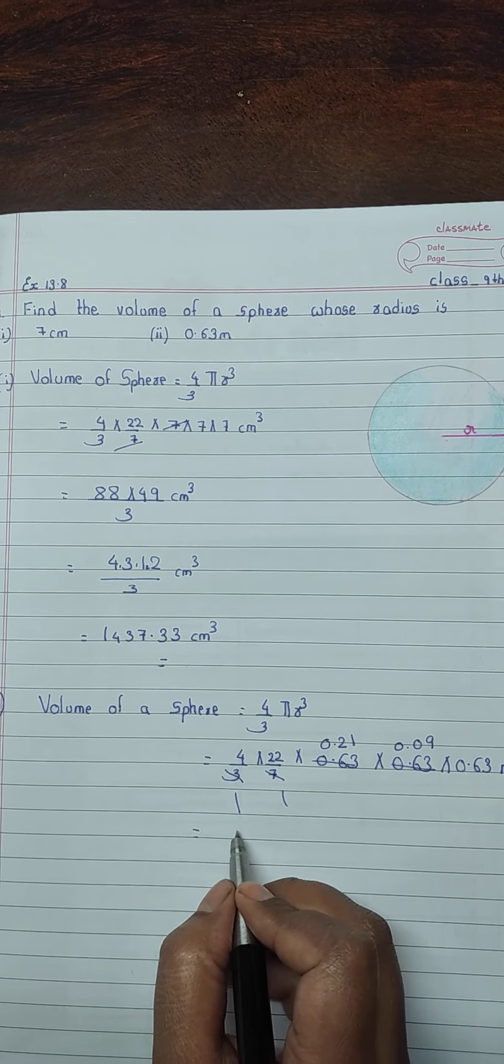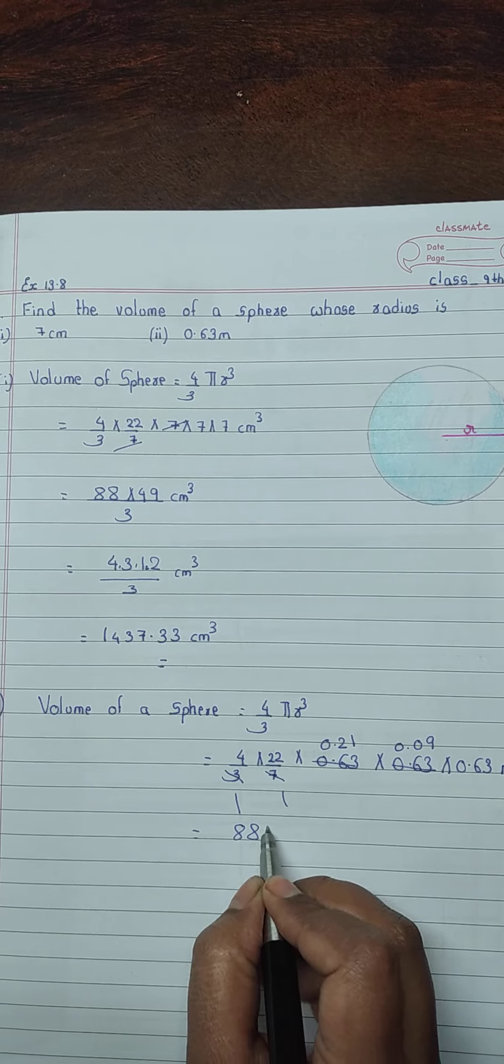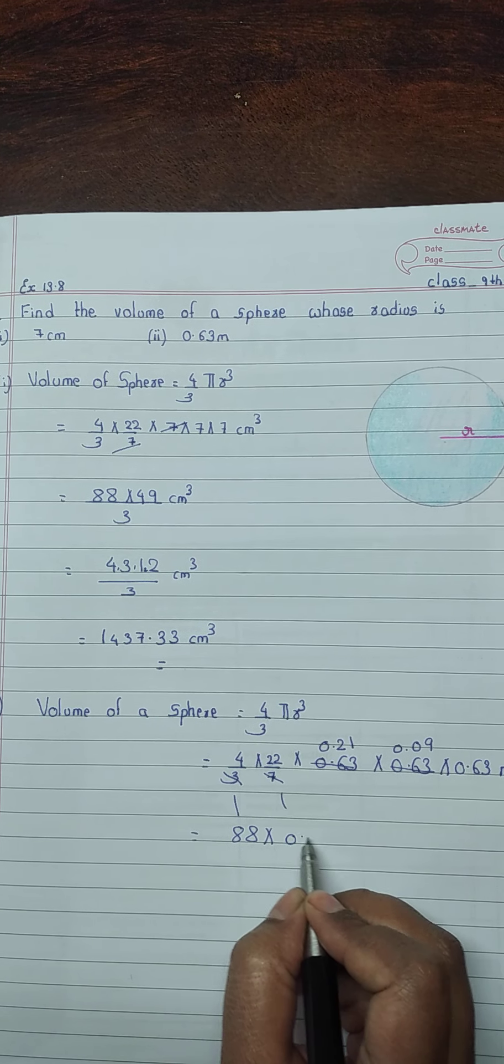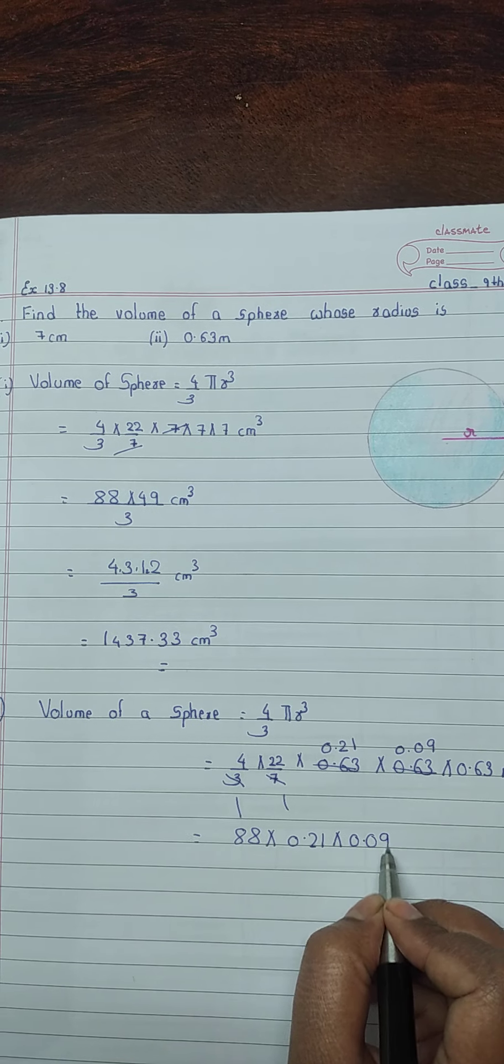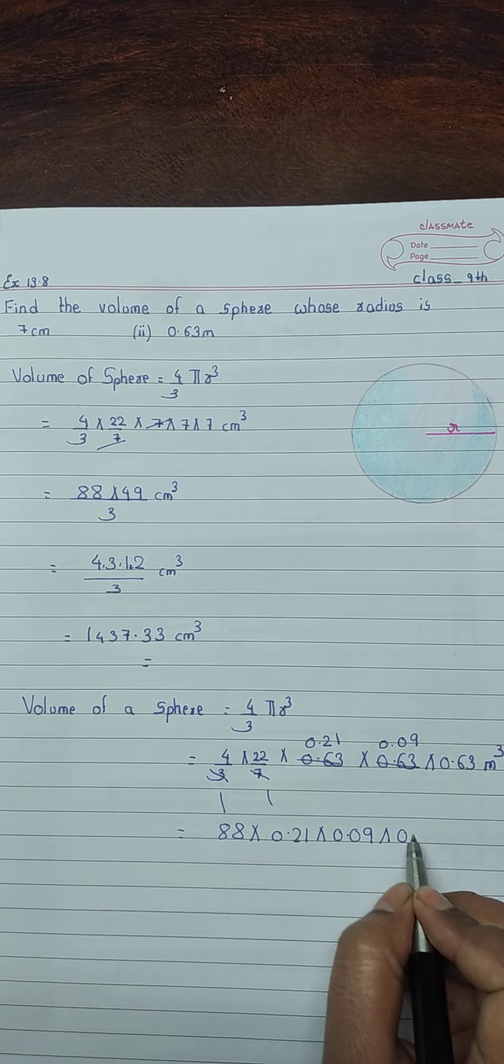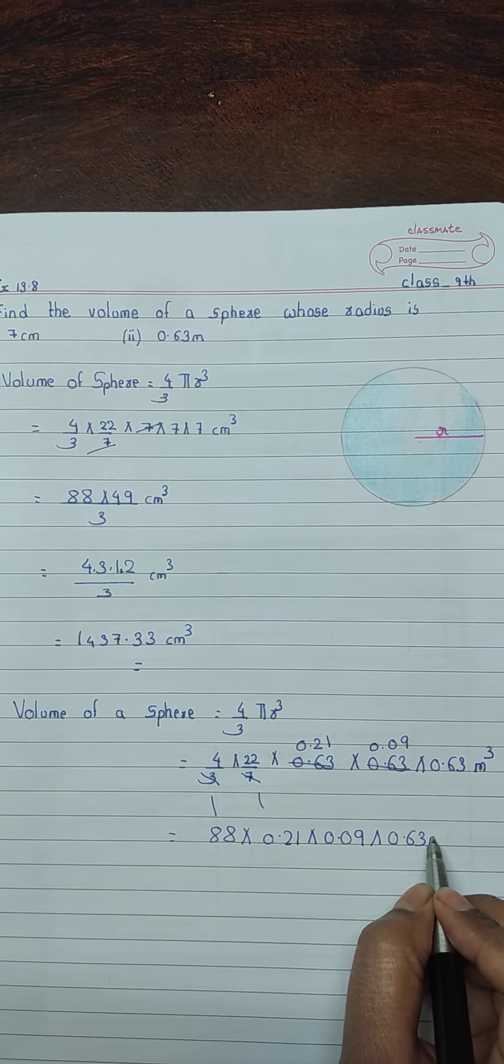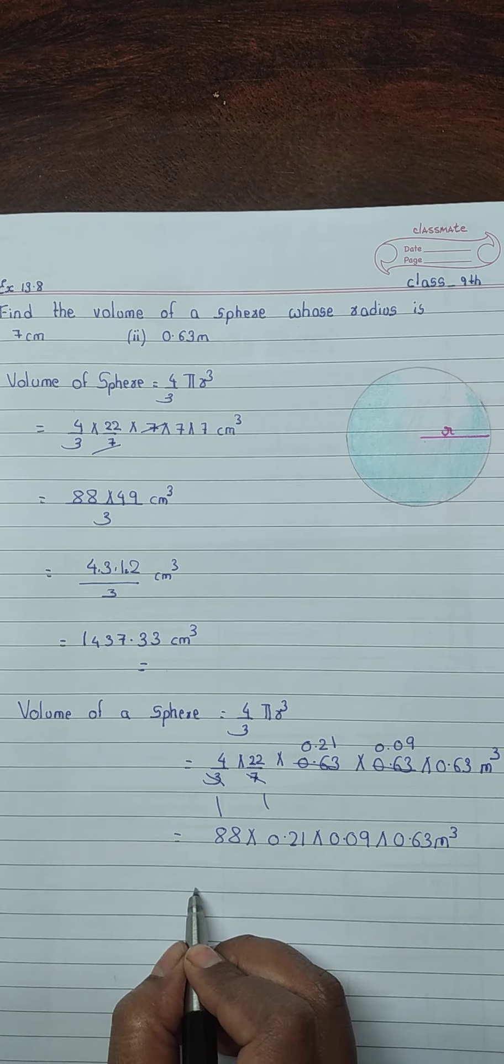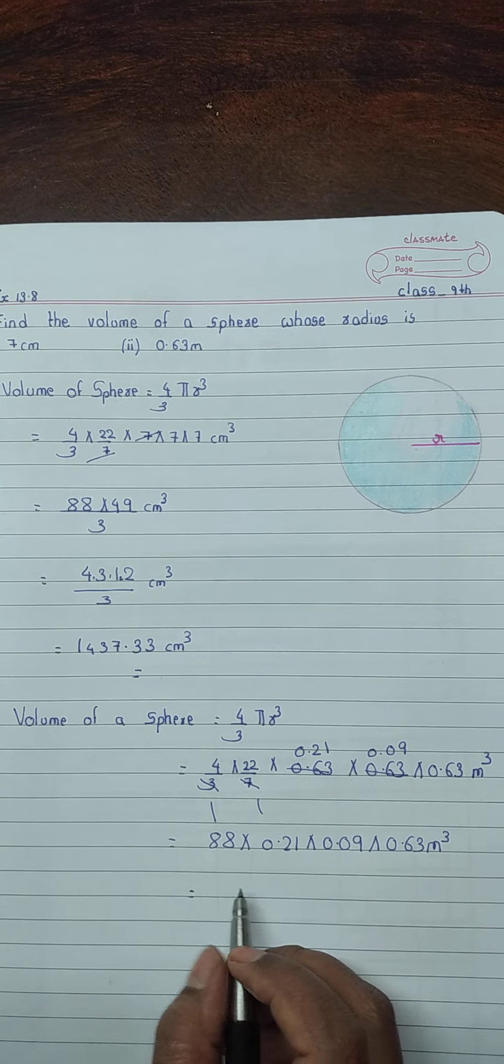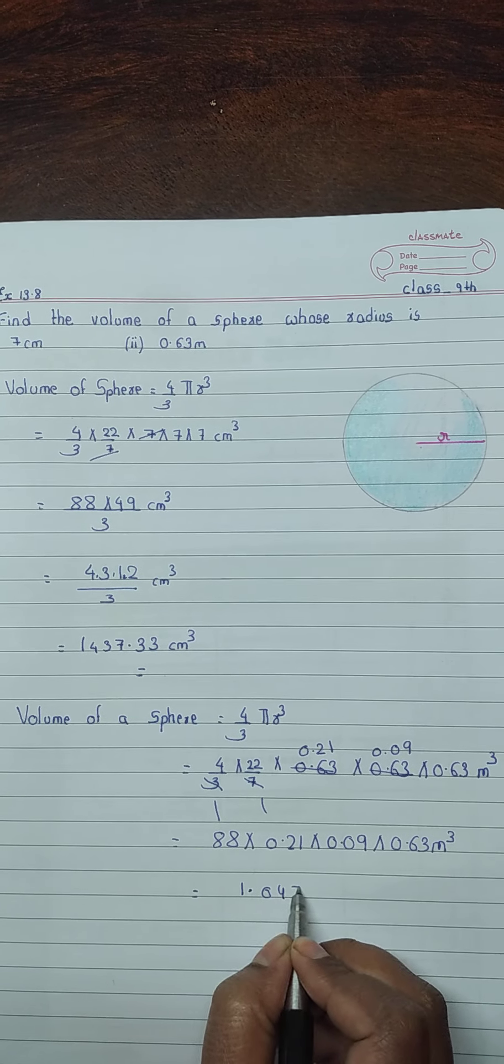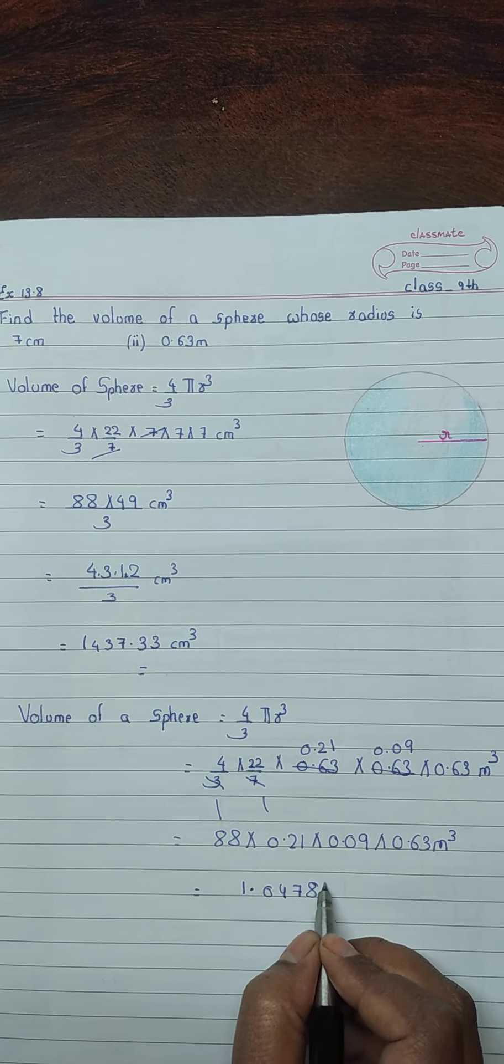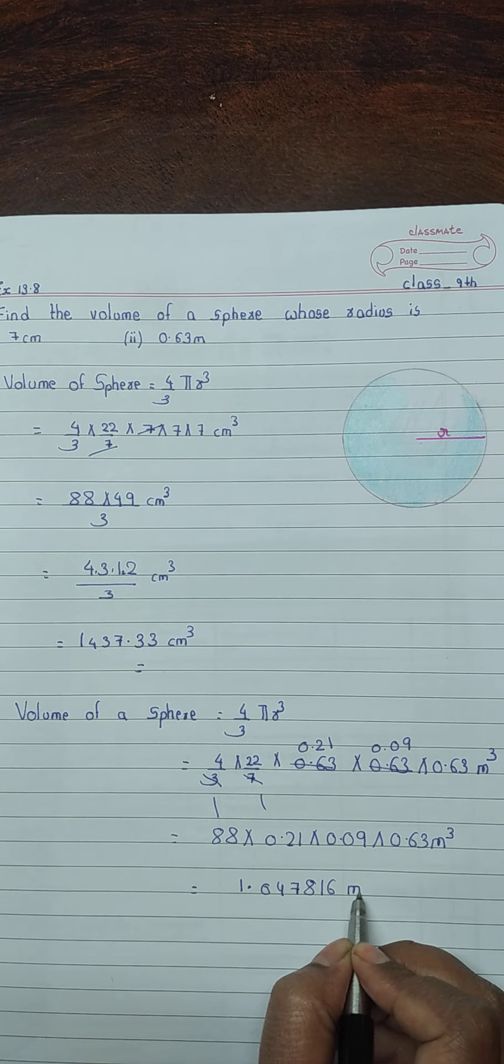22 into 4 is 88 multiplied by 0.21 into 0.09 into 0.63 meter cube. When we multiply all this, we get answer as 1.047816 meter cube.